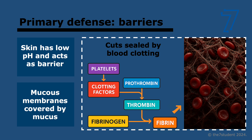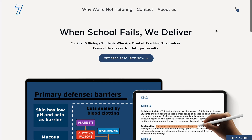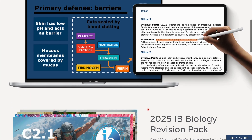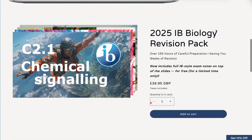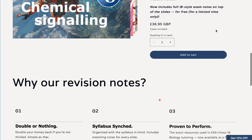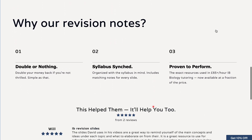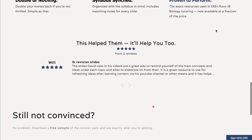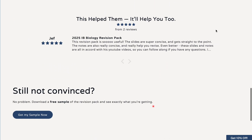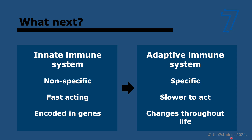So now, what happens if pathogens manage to get through before clotting and they enter the blood? The immune system is the secondary defense — it's the next layer. So if pathogens get through the first barrier, this is here to protect us.